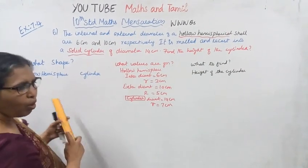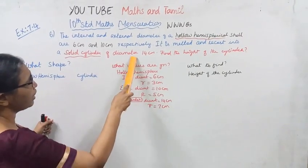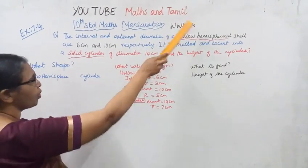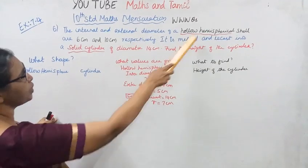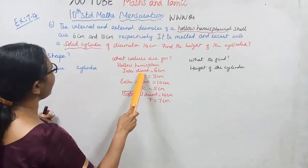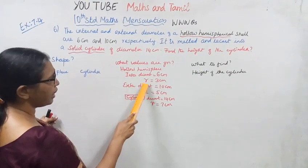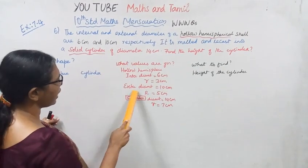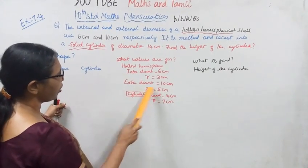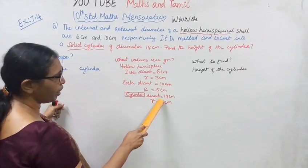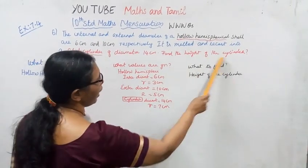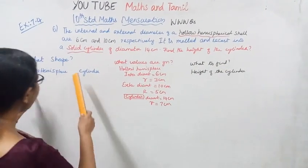The hollow hemisphere is melted and recast into a solid cylinder. The diameter is 14 centimeter. Find the height of the cylinder. What shape? Hollow hemisphere to cylinder. What values are given? Hollow hemisphere: internal diameter 6 centimeter, so radius is 6 by 2 equals 3 centimeter. External diameter 10 centimeter, so external radius capital R equals 5 centimeter. For the cylinder: diameter 14 centimeter, so radius equals 7 centimeter. We need to find the height of the cylinder.